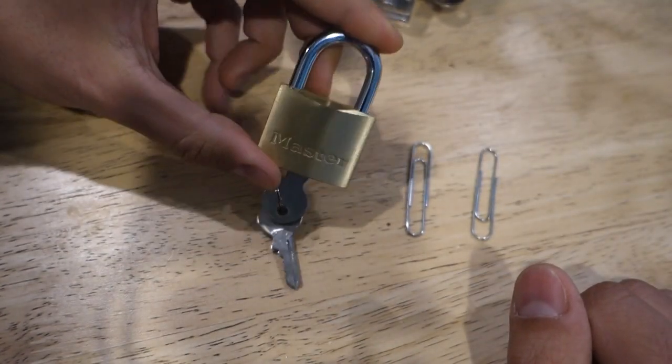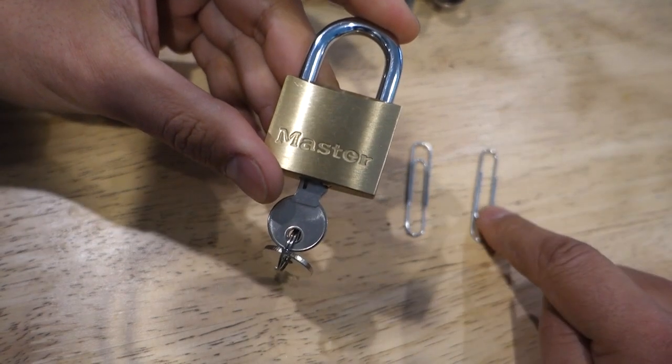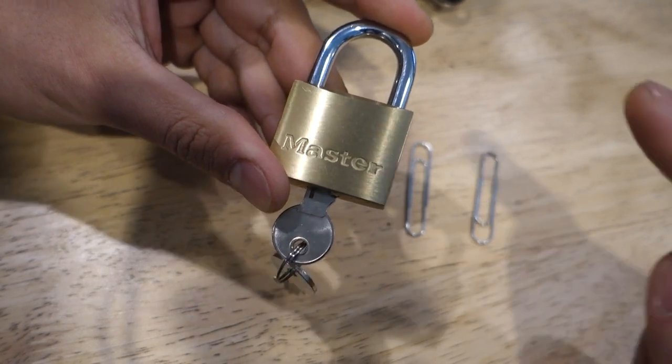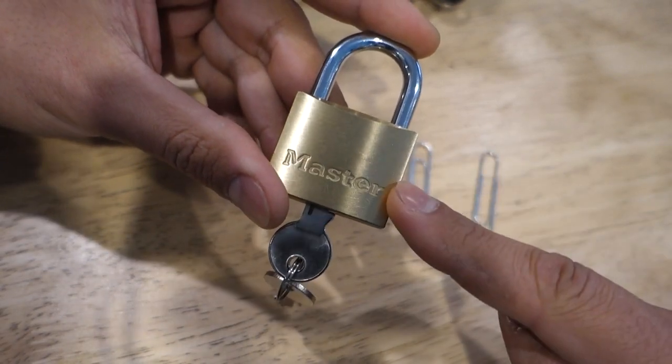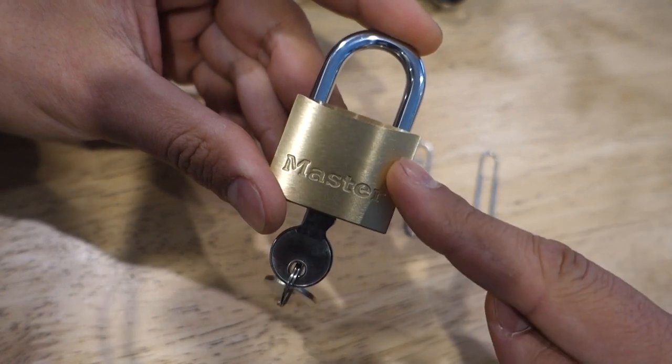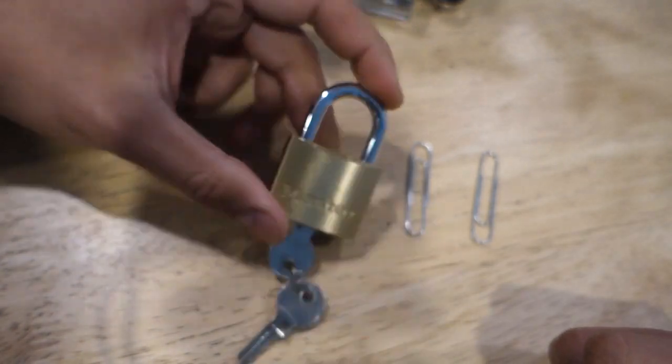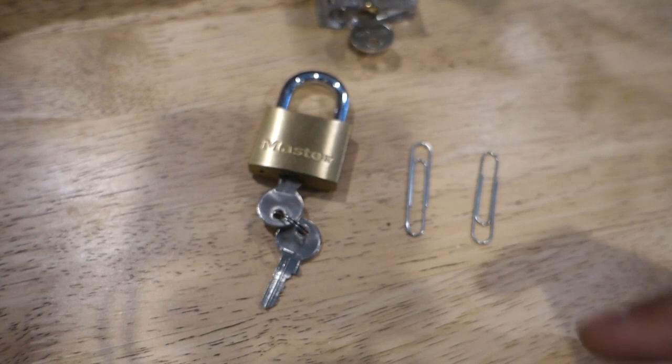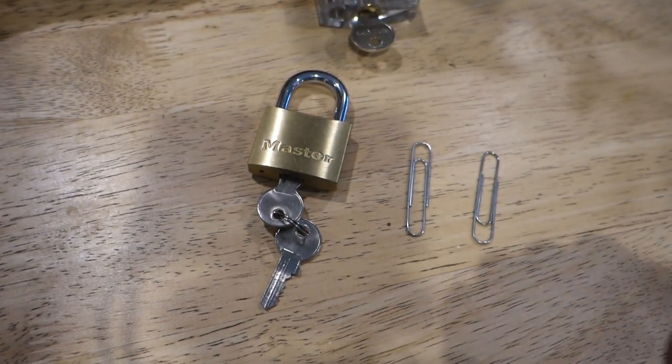So what I've decided to do is go out and buy a Master padlock and we're going to see if we can pick it using the paperclips. Master, if you're not sure, is a reputable company, makes locks all around the world and it's on the high side when it comes to buying padlocks. So let's test it out guys and see if we can pick that lock using the paperclips. Let's do this.